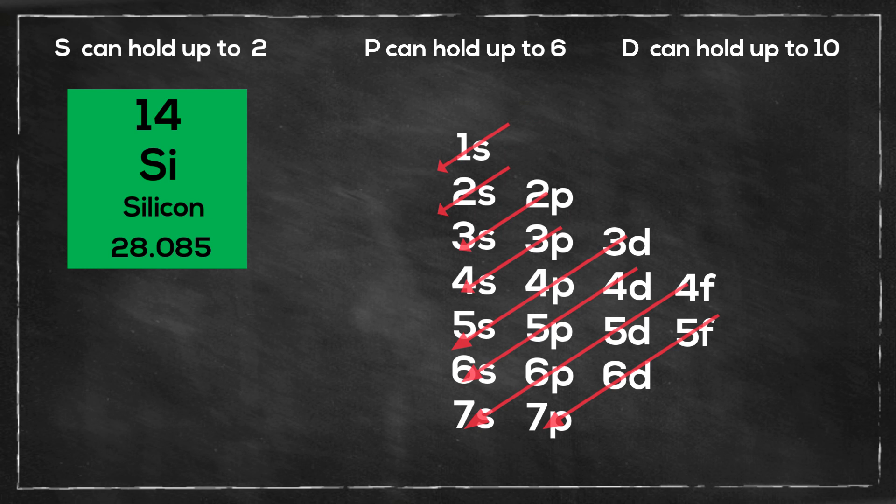Next up, silicon. Silicon has an atomic number of 14, so it has 14 electrons. So again, I will start at the 1s, so it will be 1s2.